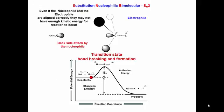However, even if the nucleophile and the electrophile are aligned correctly, they may not have enough kinetic energy for the reaction to occur. There actually is only a small fraction of the molecules in this solution that have enough kinetic energy to surmount the energy barrier to form products.